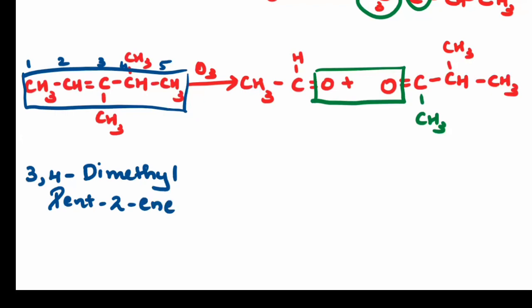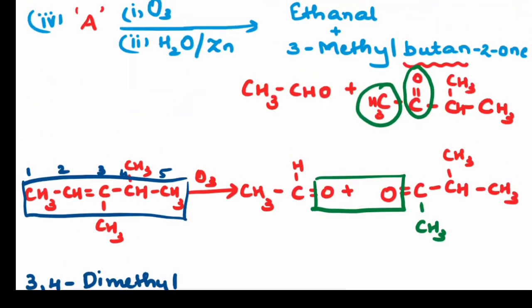So 3, 4-dimethyl pent-2-ene on ozonolysis gives the product ethanol and 3-methyl butane-2-one. And again the trick behind this is carbon double bond carbon. One of the carbons contains hydrogen, so we get aldehyde product, and the second carbon which does not contain hydrogen will give us ketone.